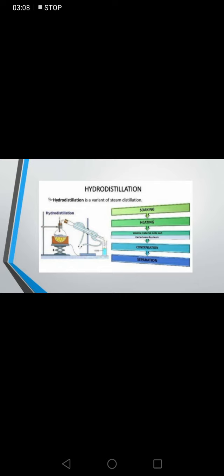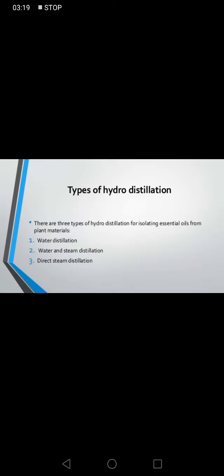The process of hydro distillation involves soaking, then heating, then being carried away by steam, then condensation, and then separation. There are three types of hydro distillation used to isolate essential oils from plant materials: water distillation, water and steam distillation, and direct steam distillation.